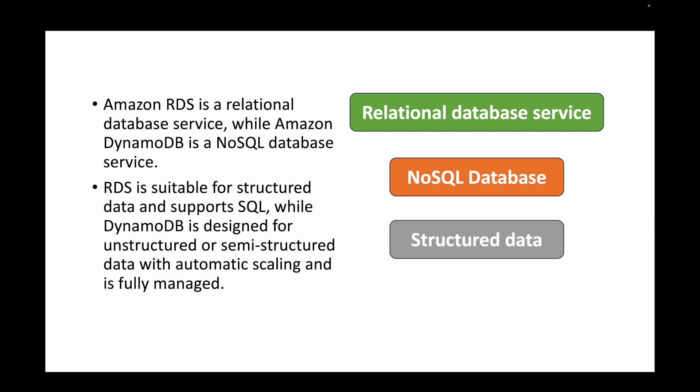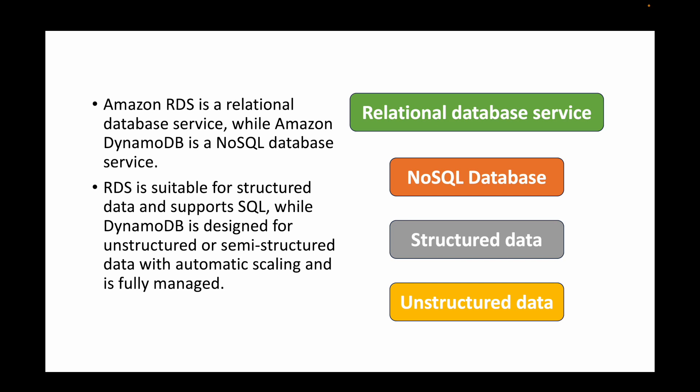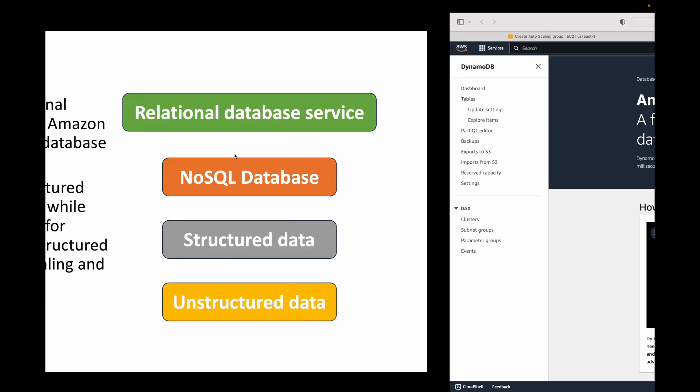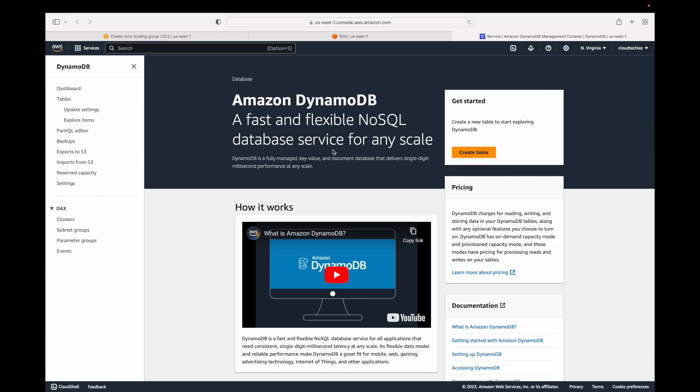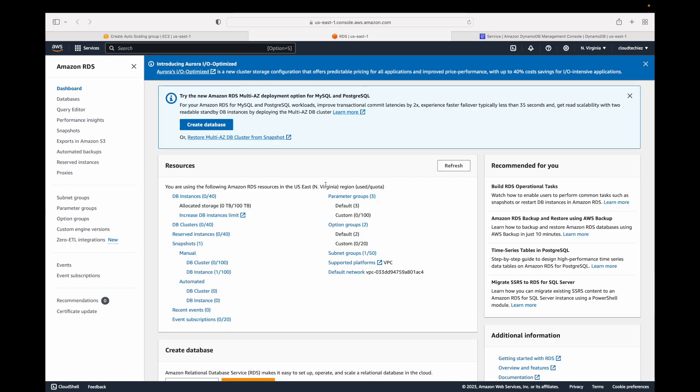RDS is suitable for structured data — when you want proper rows and columns — and it supports SQL queries to fetch data from the database. DynamoDB is designed for non-structured or semi-structured data with automatic scaling and is a fully managed service. The key difference is that DynamoDB is fully managed by AWS, whereas with RDS you manage the DB instance yourself.